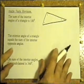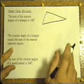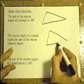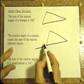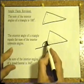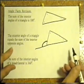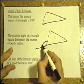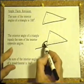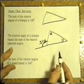Here's another angle fact. The exterior angle of a triangle equals the sum of the interior opposite angles. Any triangle you like, it doesn't matter what the length of the sides are. If you extend one of the sides, you have an exterior angle. These are the interior angles, and this is the exterior angle. These two angles here are the interior opposite angles, so this one plus this one would be the value of this one here.